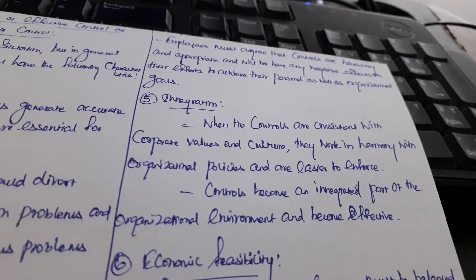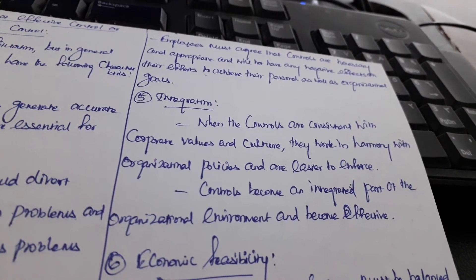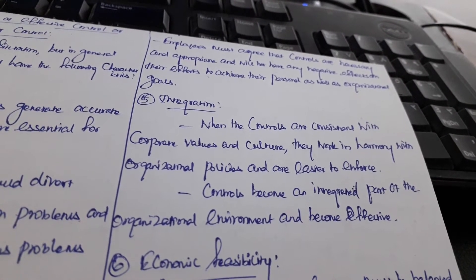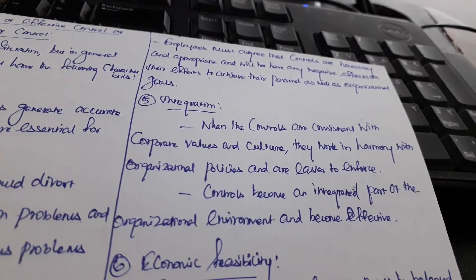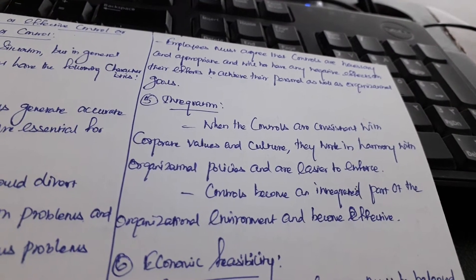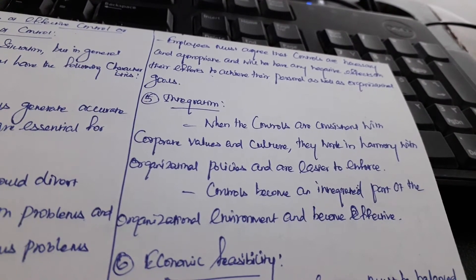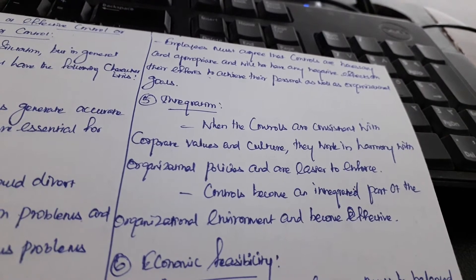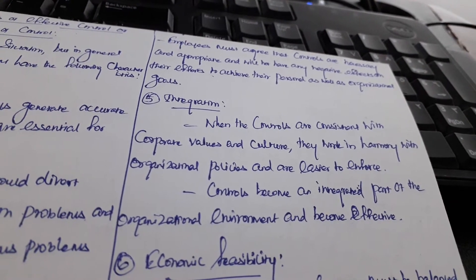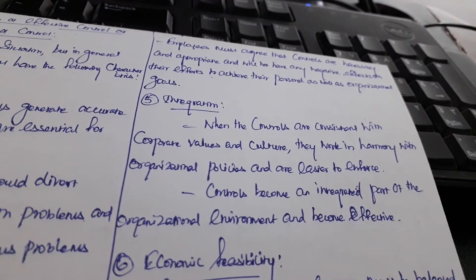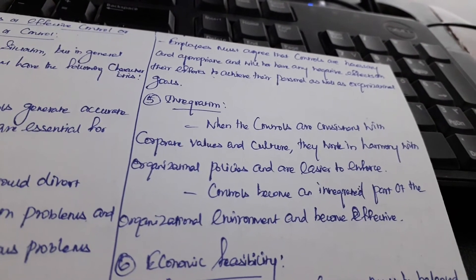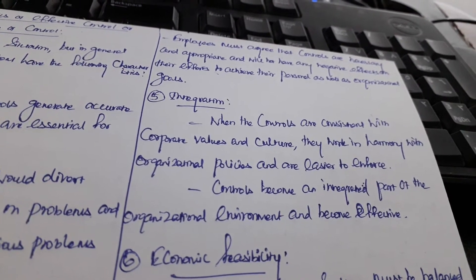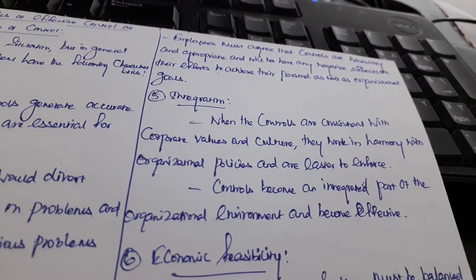Controls become an integrated part of the organizational environment and become effective. Controls are part of the organizational environment, especially within the broader organizational environment.